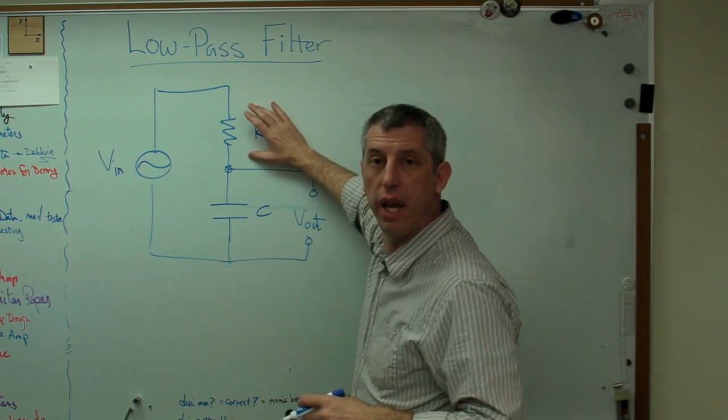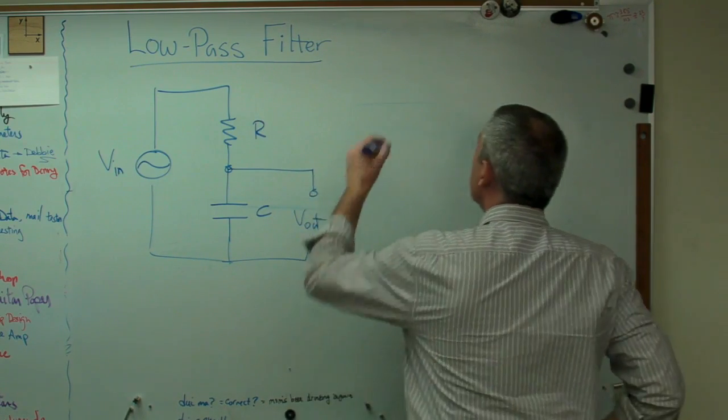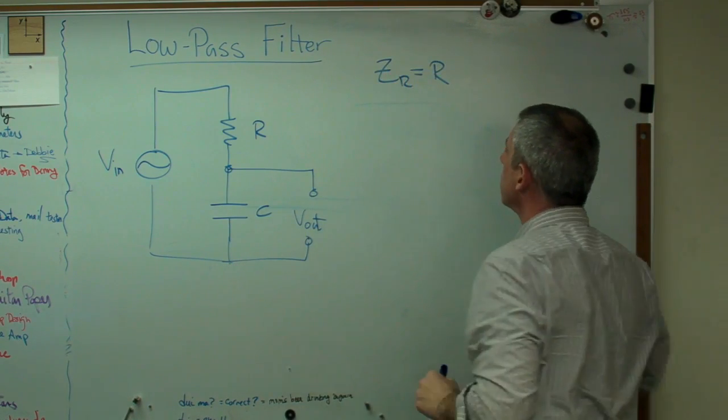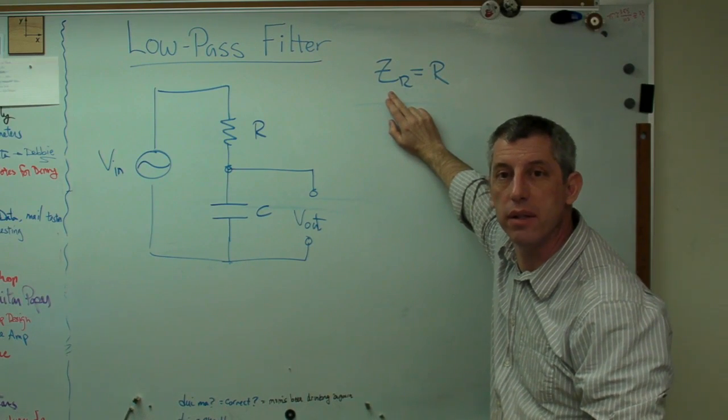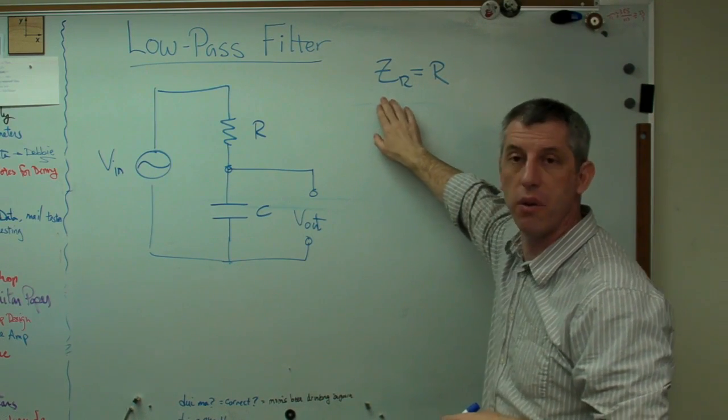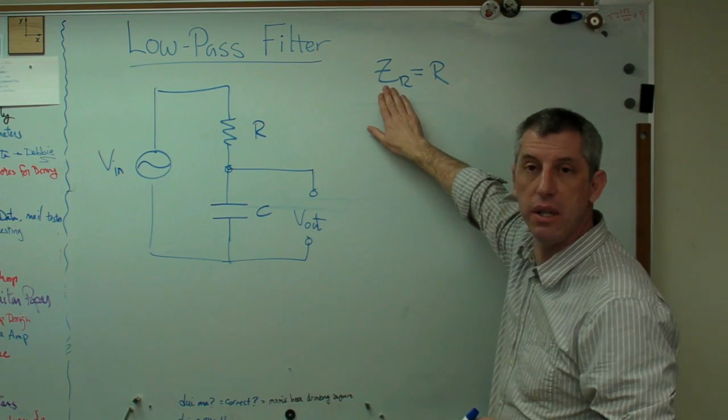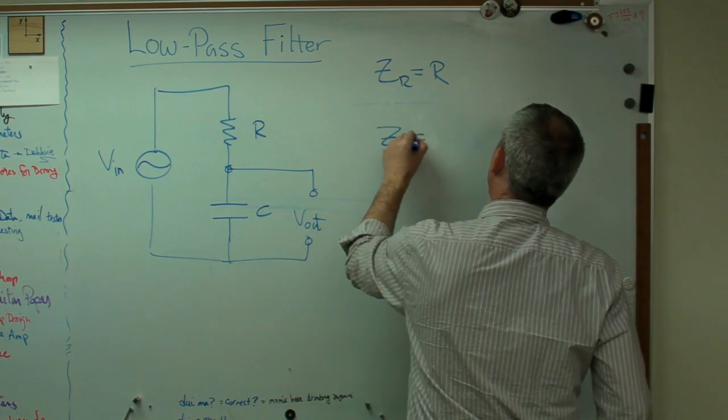So what we need to know now is what's the impedance of these two things. Well, the resistance doesn't change with frequency. Resistors act the same no matter what the frequency is. So the impedance of a resistor is just R, just like the resistance was. By the way, Z, for whatever reason, Z always means impedance. So whenever I write Z, that's impedance. Remember, just the AC version of resistance.